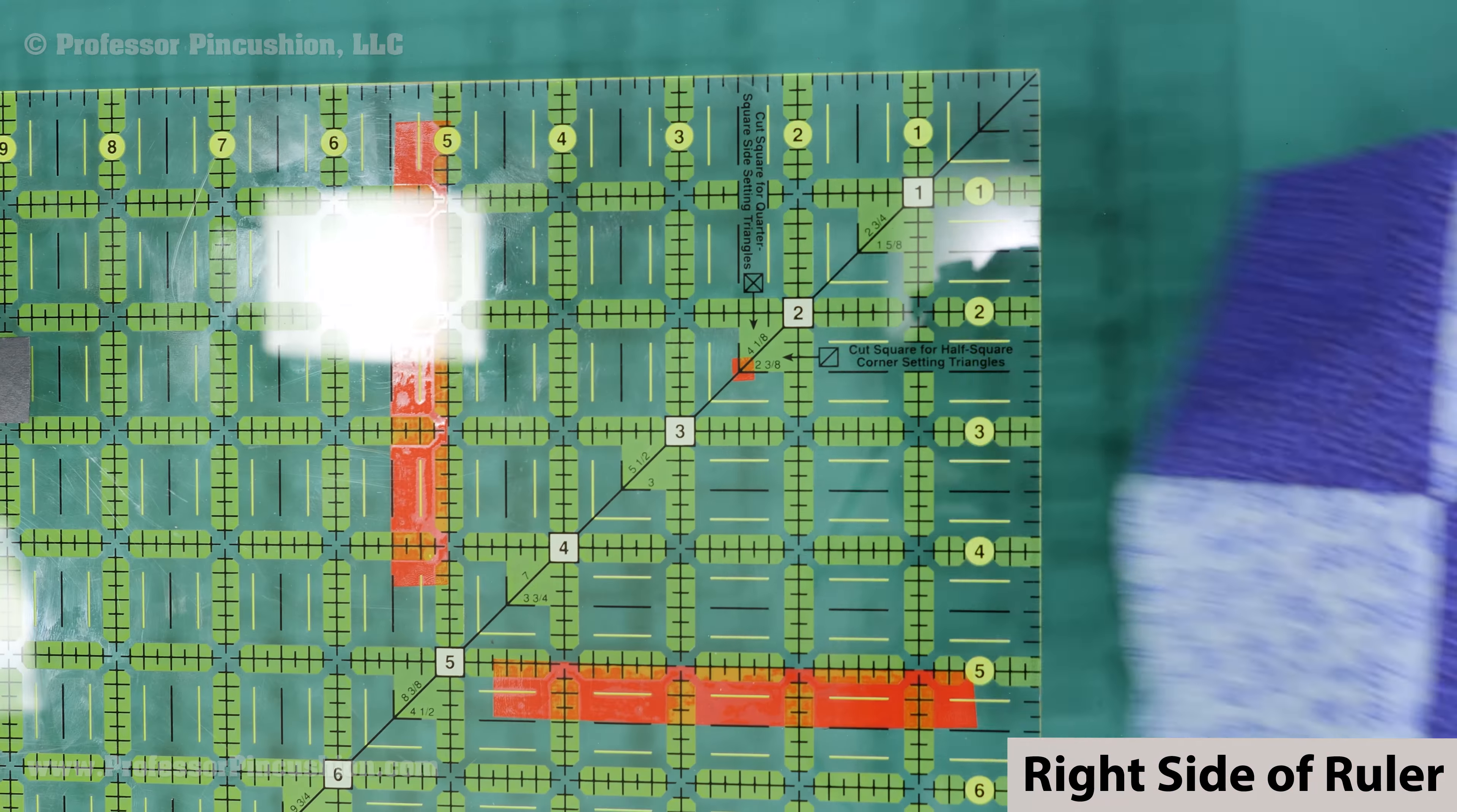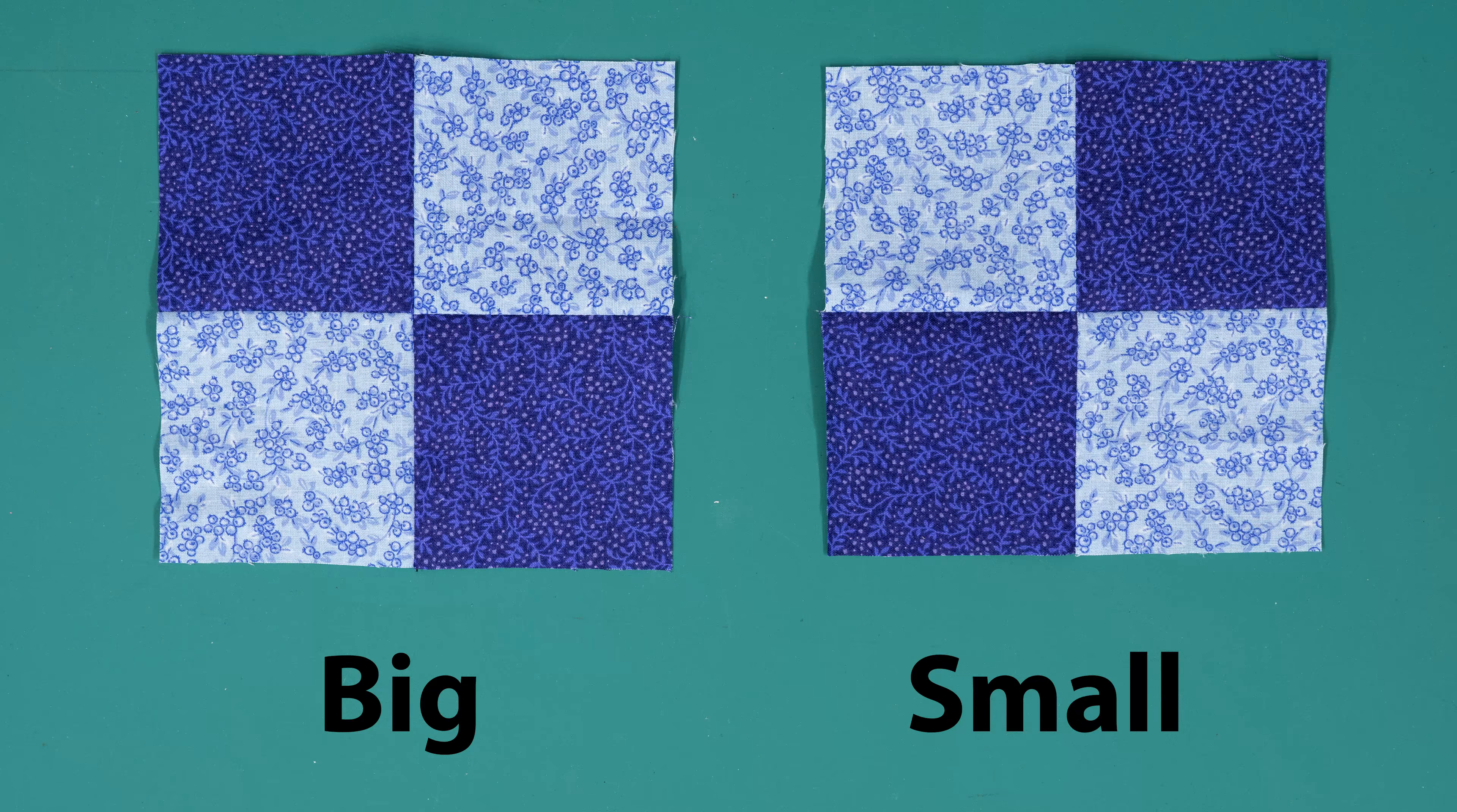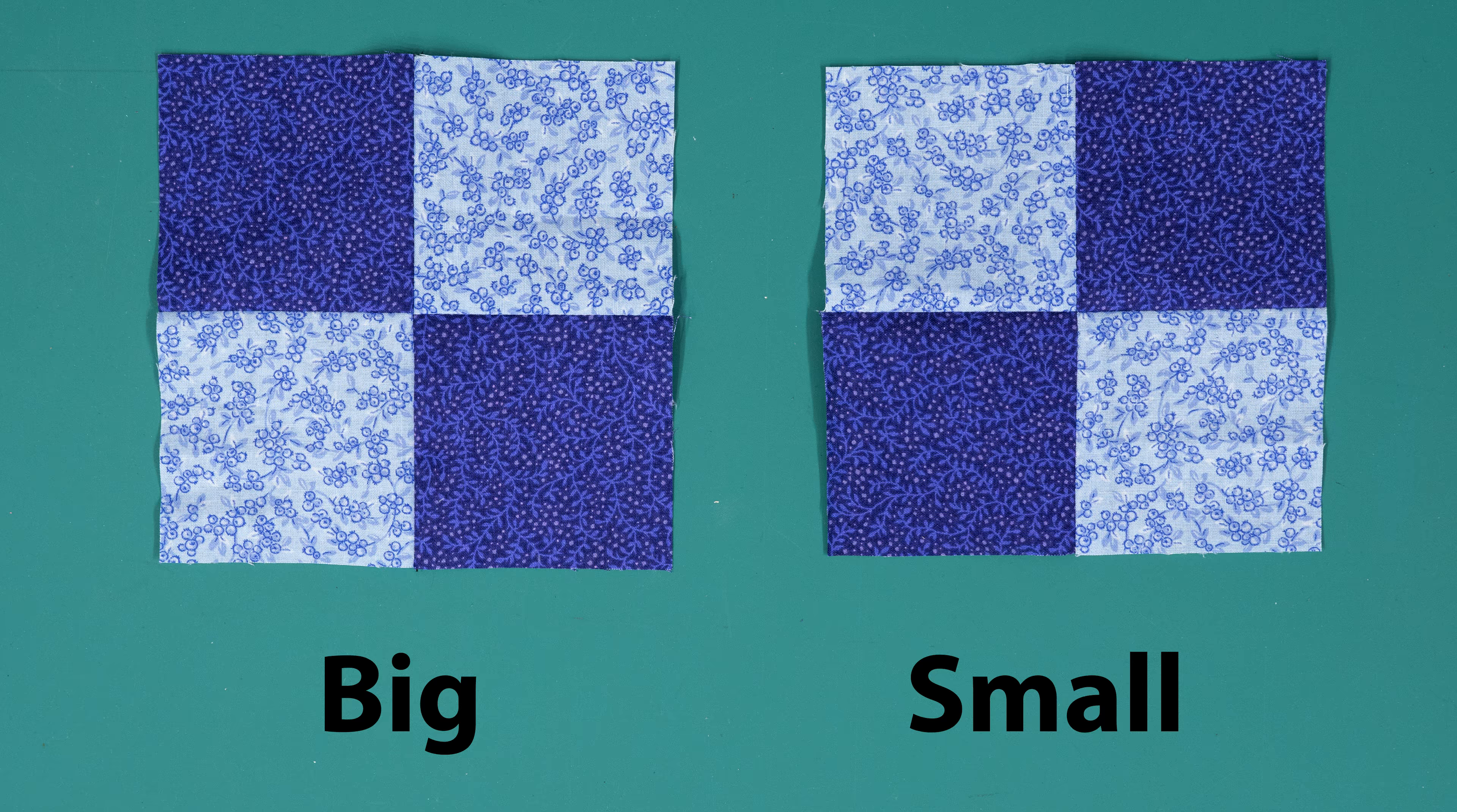Lay your quilt square under your ruler so it's mostly inside the marked area. Determine if the block is too big or too small. Even if it's only by a little, it'll probably fall into one of these two categories.